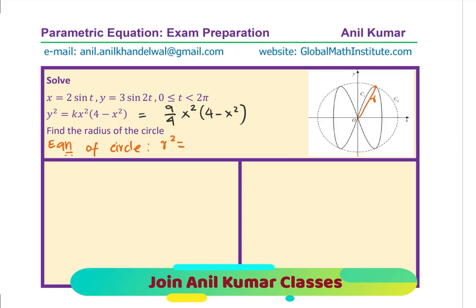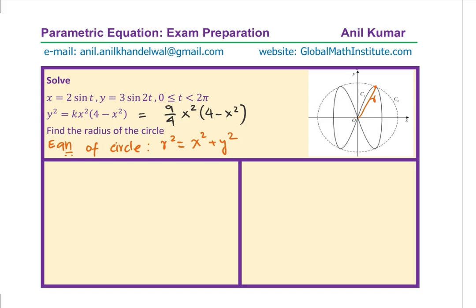The equation of circle is r² equals to x² plus y². Now we know what is y². We can write down the value from the Cartesian form of the equation for y². We get r² equals to x² plus 9 by 4 x²(4 minus x²). That becomes the equation of the circle. We need to find the maximum value of r for this particular equation.